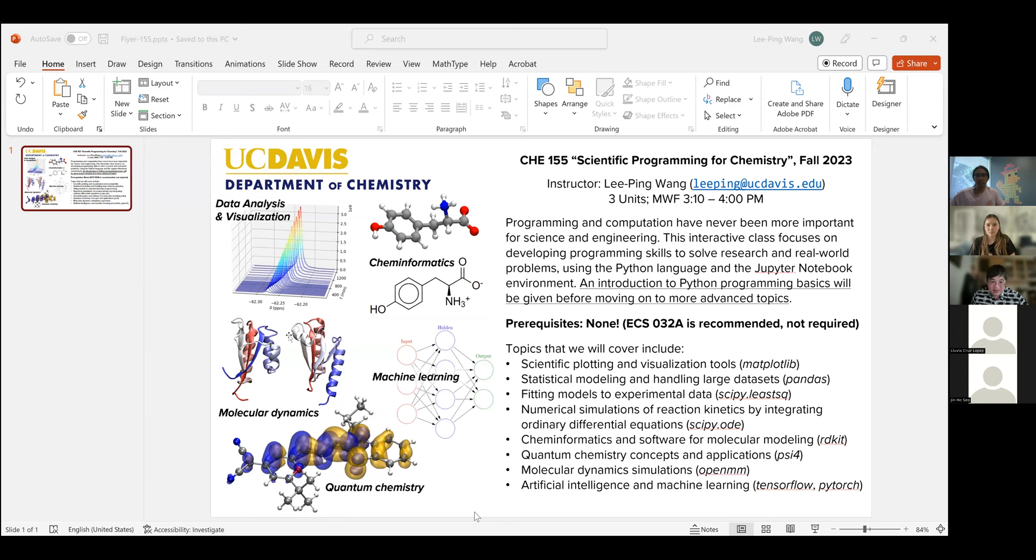I'll start by giving a description of what this course is about. The name of the course is Scientific Programming for Chemistry, being offered this coming fall. It's a three-unit upper division course. We meet Monday, Wednesday, Friday at 3:10.